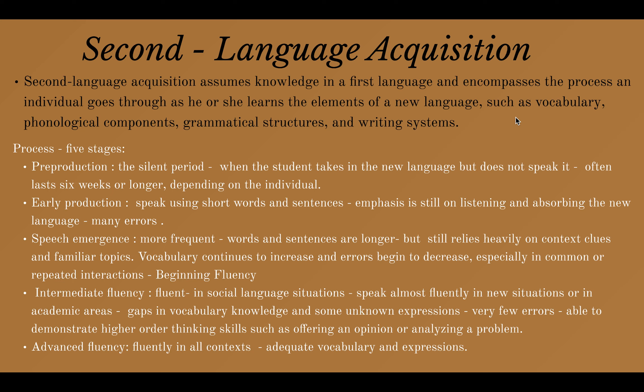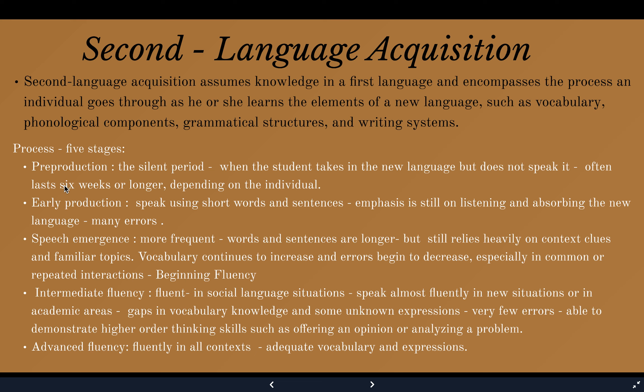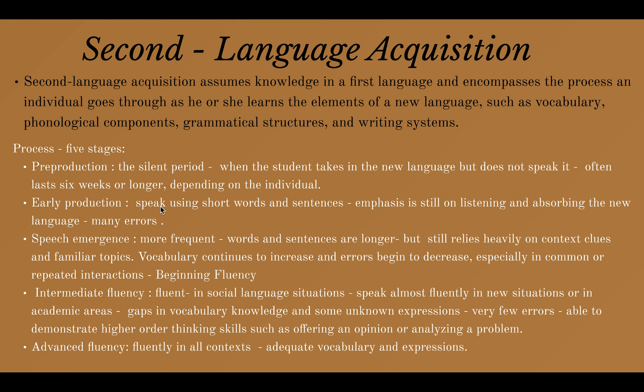First language acquisition is a natural process of learning, and second language acquisition is also a natural process of learning. In second language acquisition there are 5 stages. The first stage is Pre-Production, which is a silent period — when students are in a silent period, they are not yet speaking.